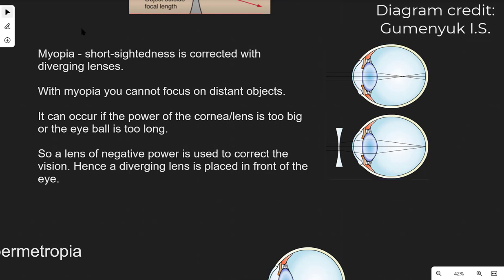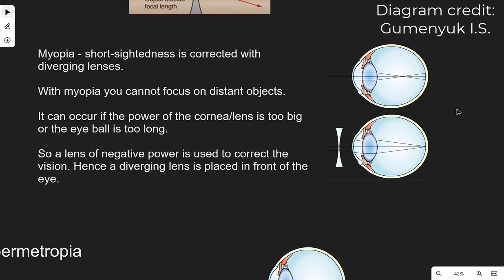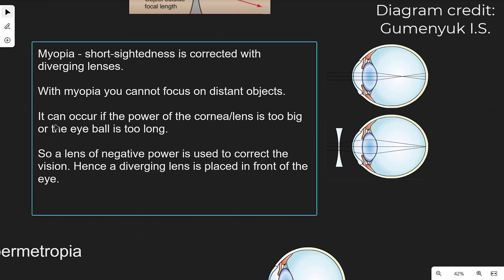We're going to talk about defects of vision. Myopia — short-sightedness — is corrected with a diverging lens. Without correction, the rays focus in front of the retina, not at it, so we cannot focus on distant objects. It can occur if the power of the cornea or lens is too great, or if the eyeball is too long, so we need a lens of negative power to correct this.